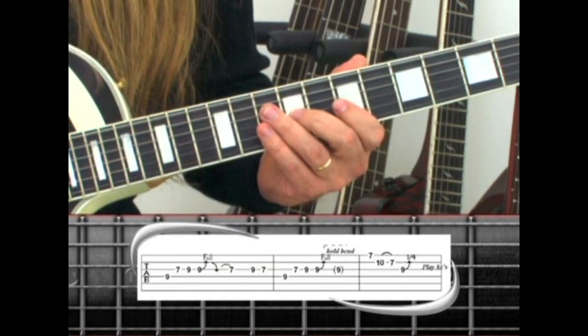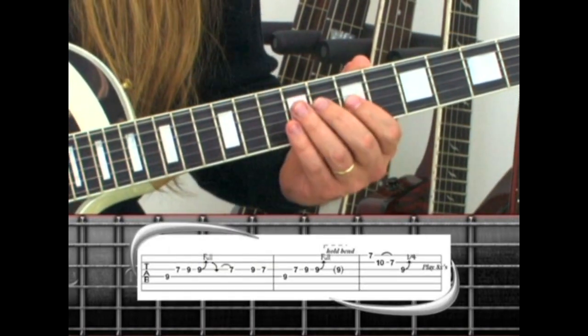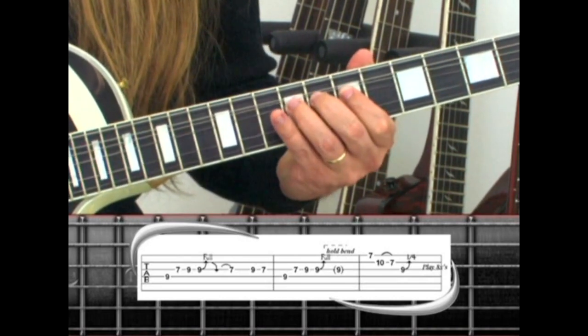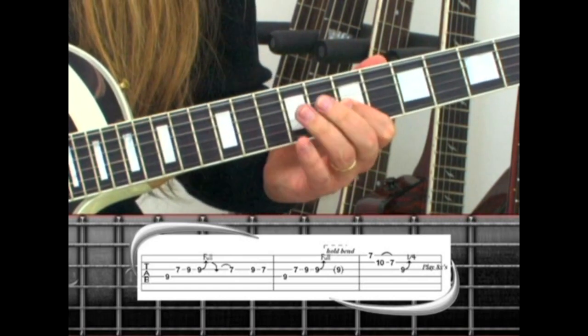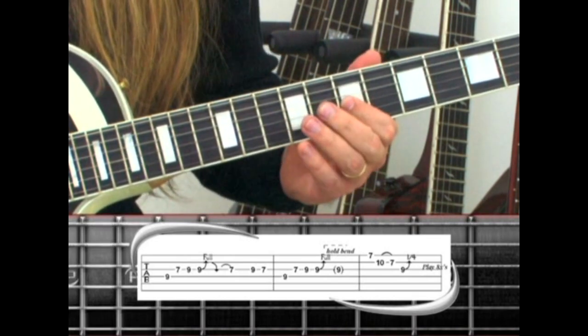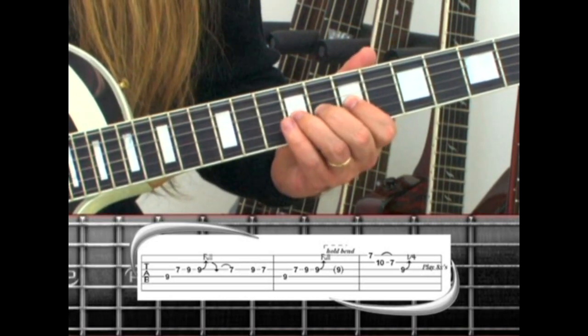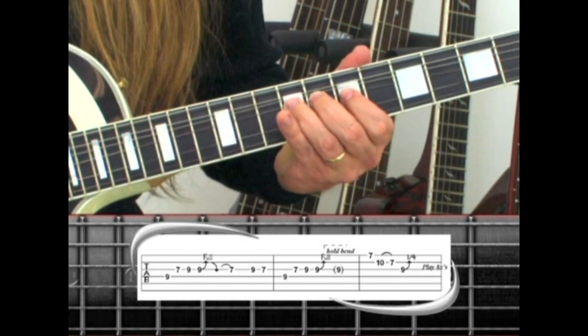For phrase 23, start on the fourth string, nine, to the third string, seven, nine, nine with the bend, release, pull off to seven, nine, seven. Then fourth string, nine, third string, seven, nine, nine with the bend and hold.